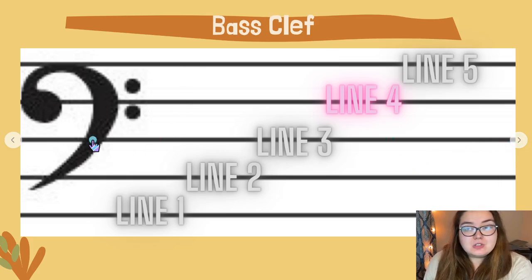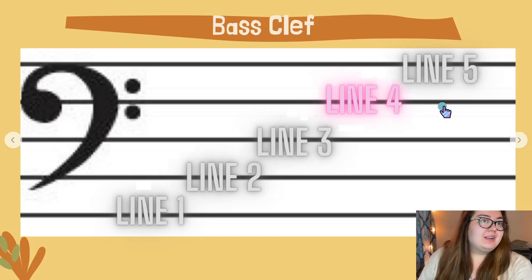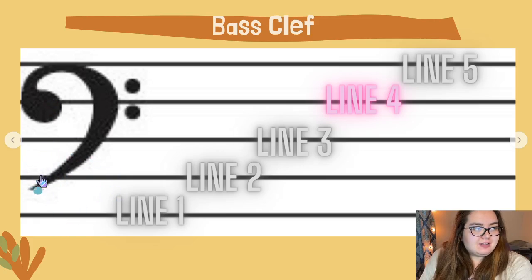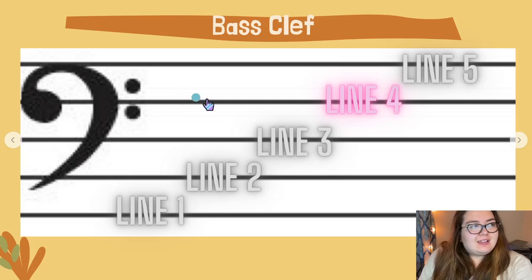Here's our bass clef. Bass clef is normally what we write our harmonies in — you can write it in treble clef too, but a lot of harmonies and chords are written in bass clef for most popular songs. Just like the treble clef, we have line one, line two, line three, line four, and line five. The bass clef is basically a backward C with two dots, and line four goes between those two dots. The bass clef is also known as the F clef, just as the treble clef is known as the G clef. The treble clef's curl goes around line two indicating G; similarly, the two dots in the bass clef indicate that the line between them — line four — is F.